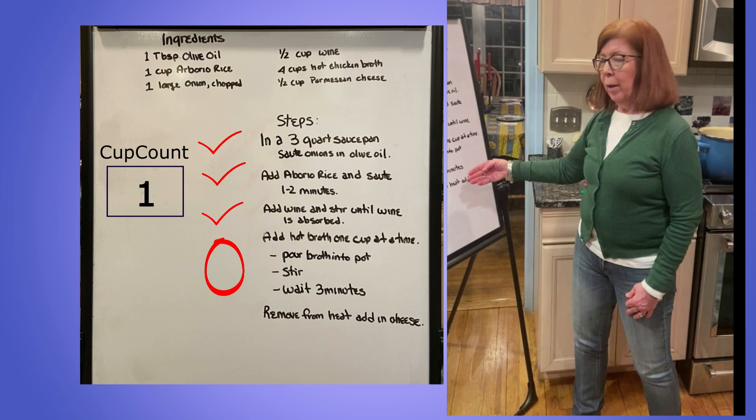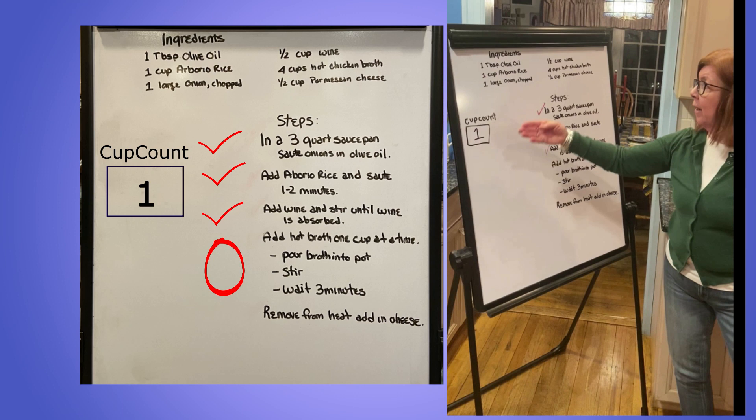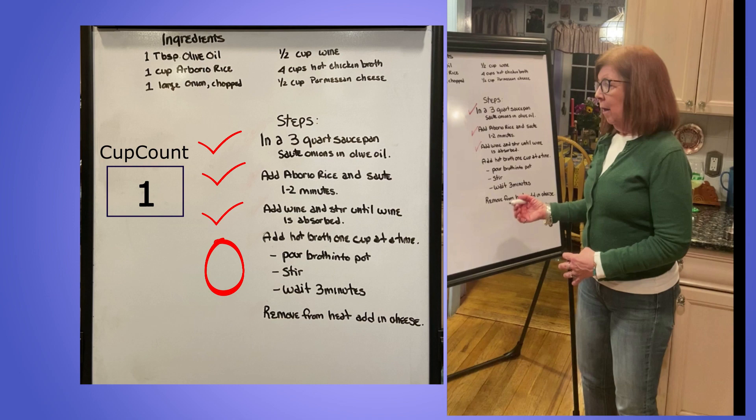I've waited three minutes. I'm going to go back to the first step to add the hot broth and see how many cups I've added. Have I added the four cups? I've only added one. So now I will add a second cup and change the cup count to two.